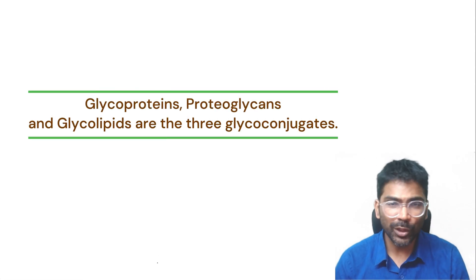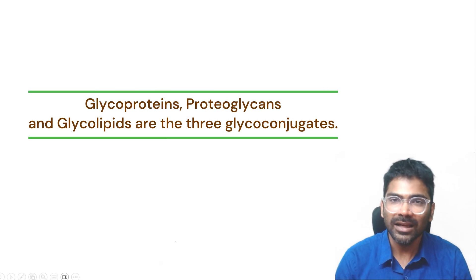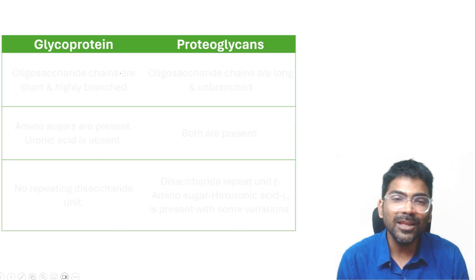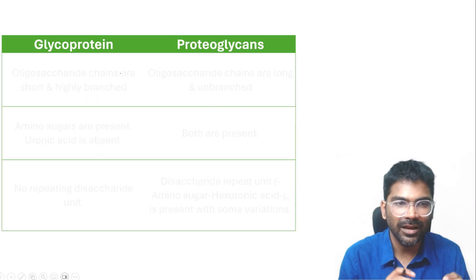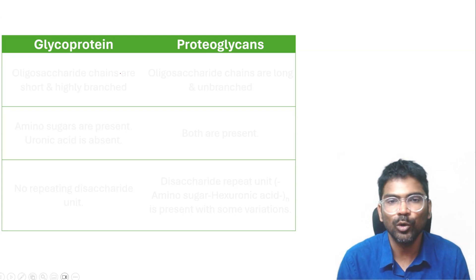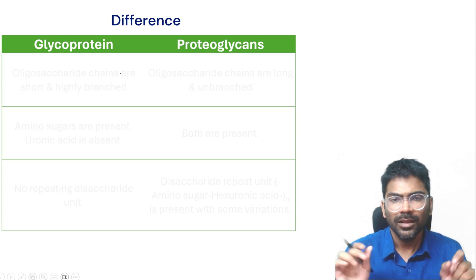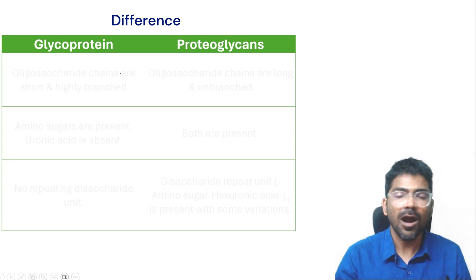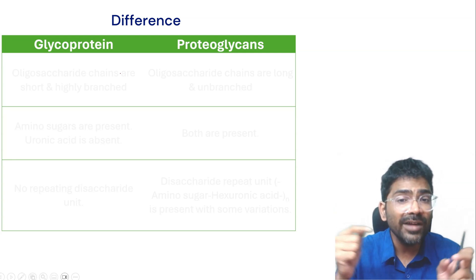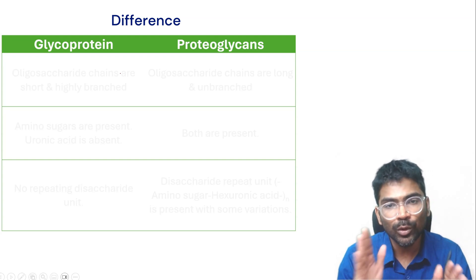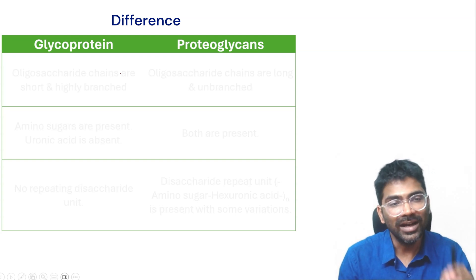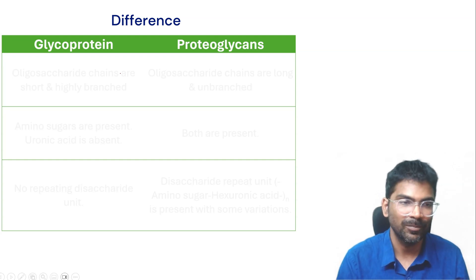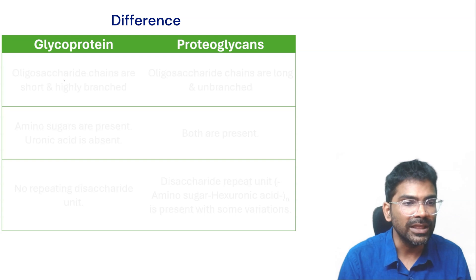Glycoproteins, proteoglycans, and glycolipids are the three types of glycoconjugates. It is very important to differentiate glycoproteins and proteoglycans. In both of these, the carbohydrate is covalently attached to the protein portion, but the nature of the carbohydrate is different.